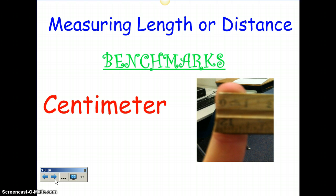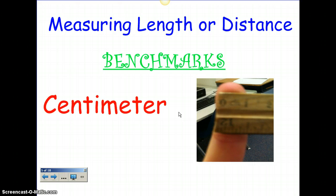Let's go over some benchmark measurements for measuring length or distance. A centimeter is about the distance across the tip of a finger — as you can see, we have a picture of that, and that's about one centimeter. Everybody's body is different, but if you ever want to know what a centimeter is, look at your index finger and look at how wide across it is, and that would be a centimeter.